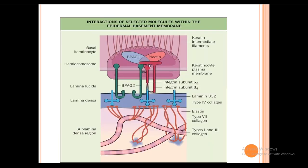This is complicated but important to understand. The basal keratinocyte has hemidesmosomes and keratin intermediate filaments. On the hemidesmosome there is an antigen called Bullous Pemphigoid Antigen 1 and laminin, which is in contact with the lamina lucida and lamina densa — the dermo-epidermal junction. The dermal part (sub-lamina densa region) has Type 7 and Type 4 collagens. At the level of the dermo-epidermal junction there is Bullous Pemphigoid Antigen 2.